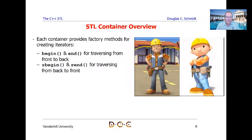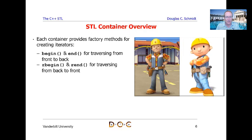Each container provides factory methods for creating various types of iterators. Typically the factory methods are begin and end, which give iterators that go from front to back of the collection, and rbegin and rend, which traverse from back to front. There are also methods for creating const iterators, so there are both non-const and const versions. Depending on the context in which things are used, either the const or non-const version will be invoked.